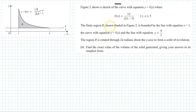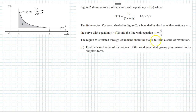The domain is x from 1 to 5. The finite region shown shaded in the figure is bounded by the line x equals 1, the curve y equals f(x), and the line y equals 4 over 3. So the y-value is 4/3 and the x-value is 1.